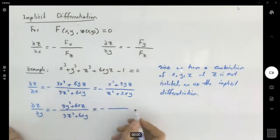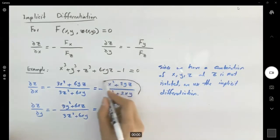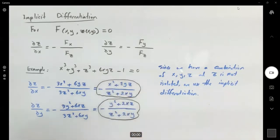Let us factor out 3: y squared plus 2xz divided by z squared plus 2xy. So we found the partial derivatives, the rate of change of z with respect to x and y.